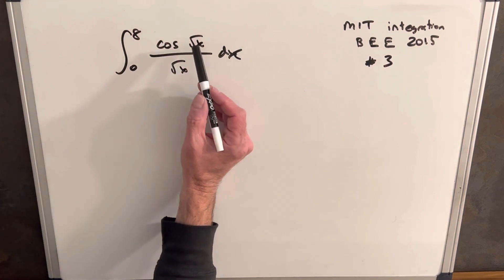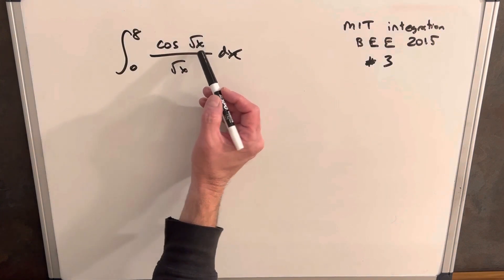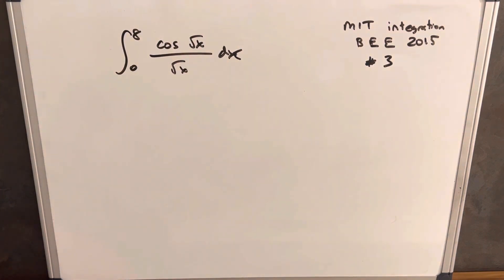Where I want to start is I need to get rid of this square root x, but we can't integrate that and we can't really deal with that. So let's make that our u in a u substitution.